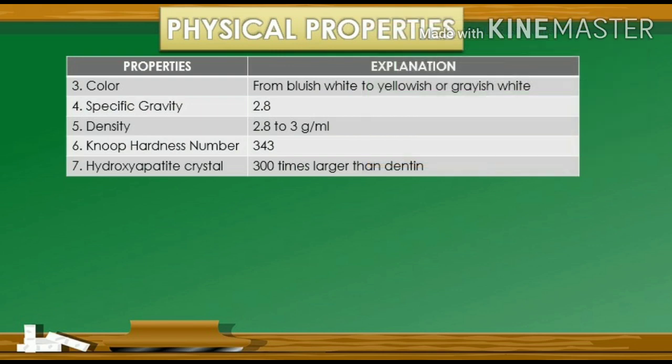The color of the enamel varies from bluish white to yellowish or grayish white. The color is determined by differences in the translucency and thickness of enamel. The specific gravity of enamel is 2.8.